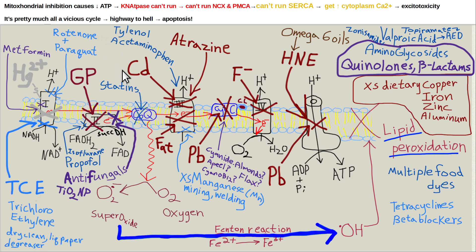Paraquat was often found in marijuana, and rotenone is another pesticide and herbicide that inhibits mitochondria. Anti-seizure medications are also potentially dangerous — zonisamide, valproic acid, and topiramate all inhibit mitochondrial function. They slow you down and have been reported to lower IQ. Maybe somebody might need them, but if you can avoid them, that would be good.